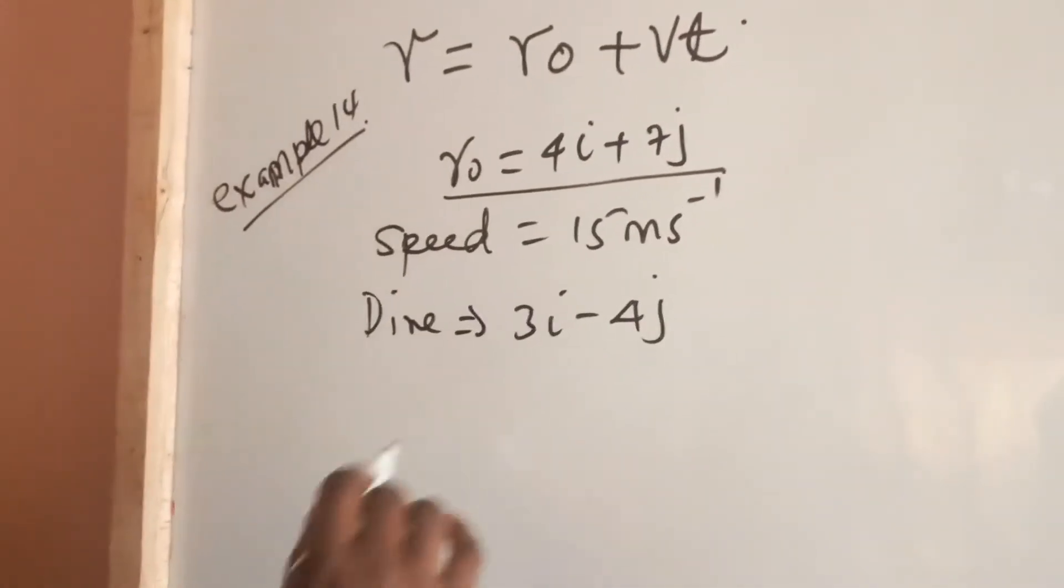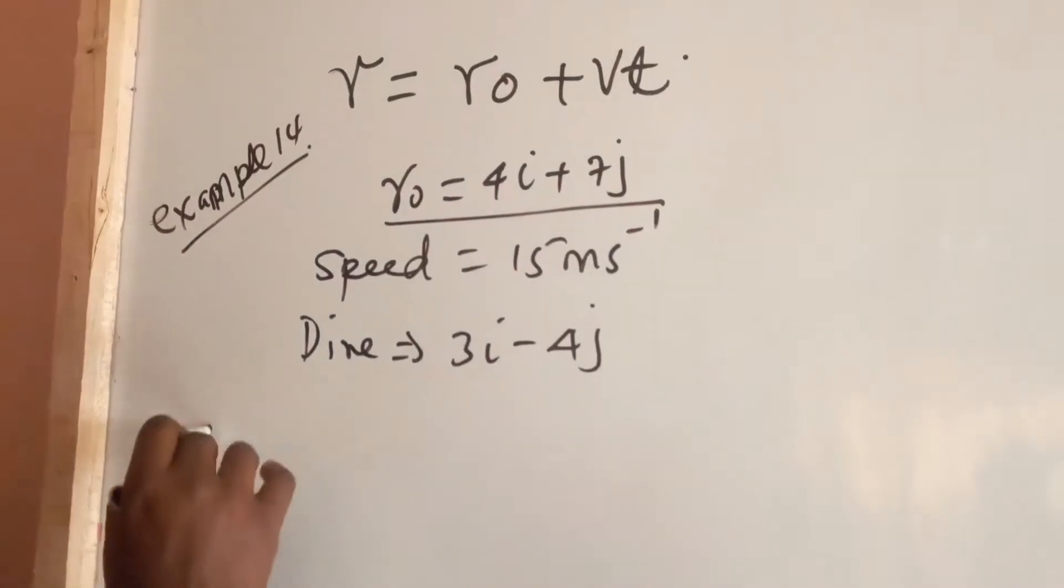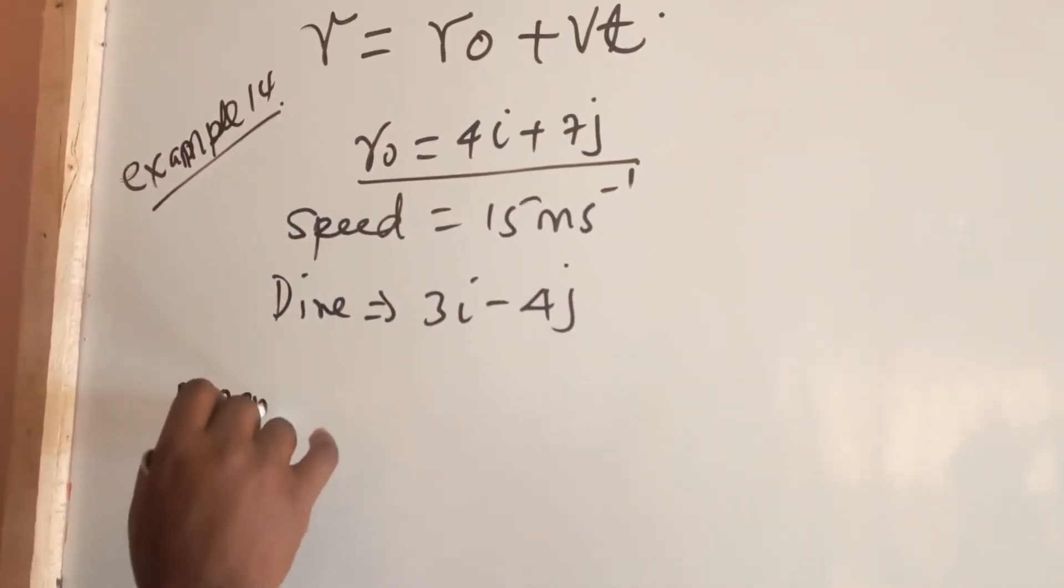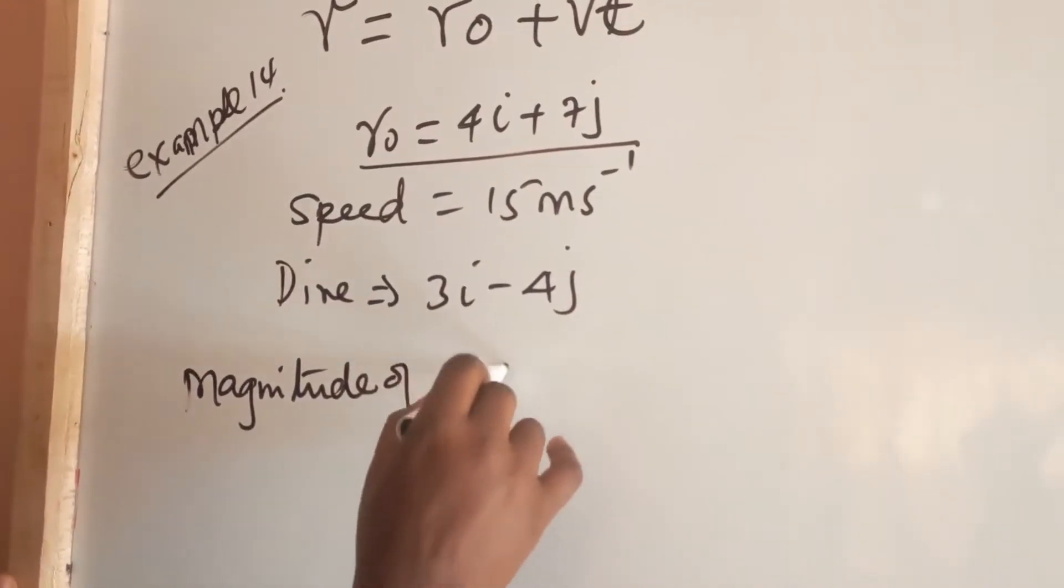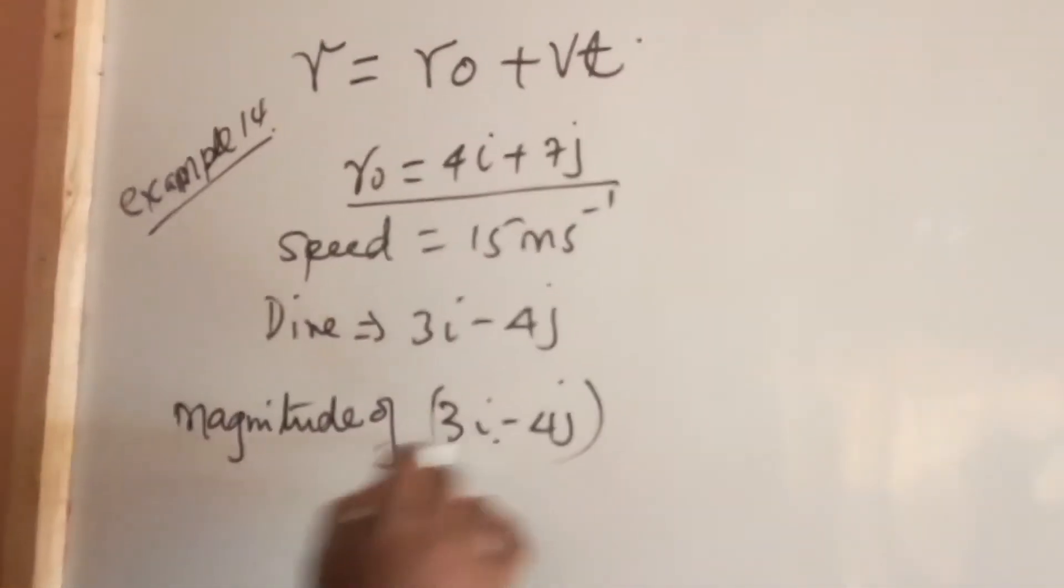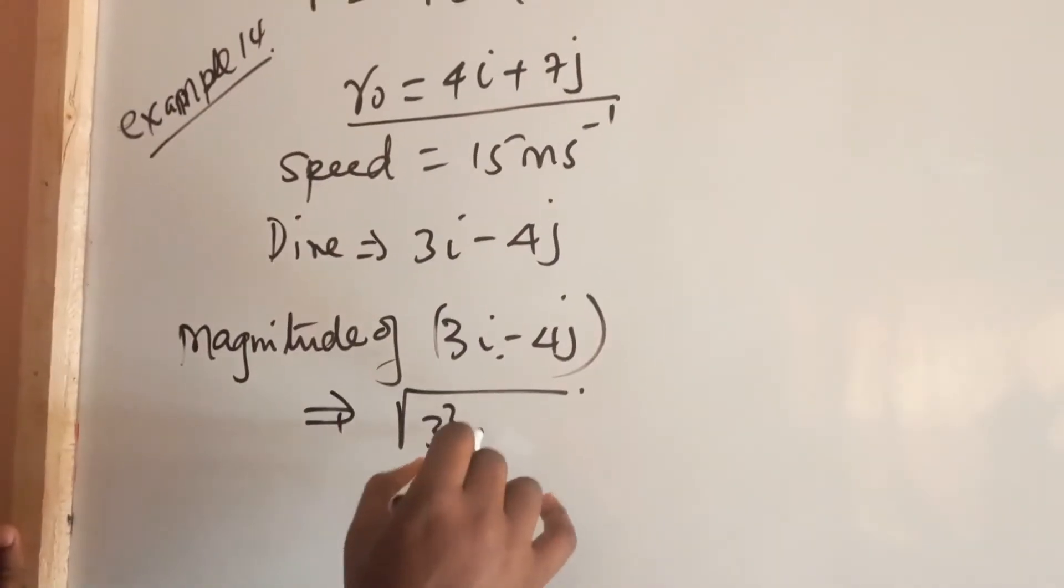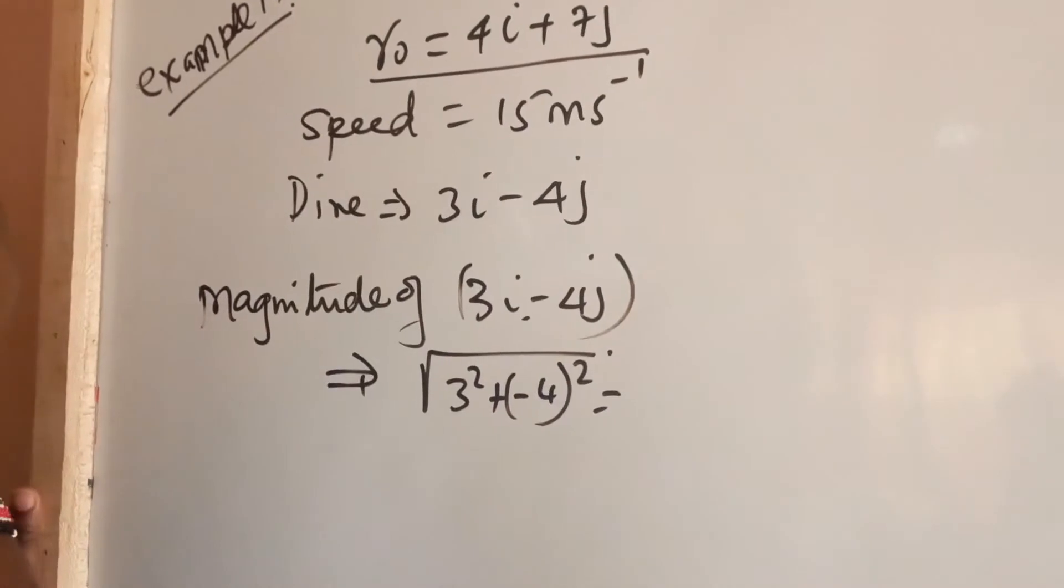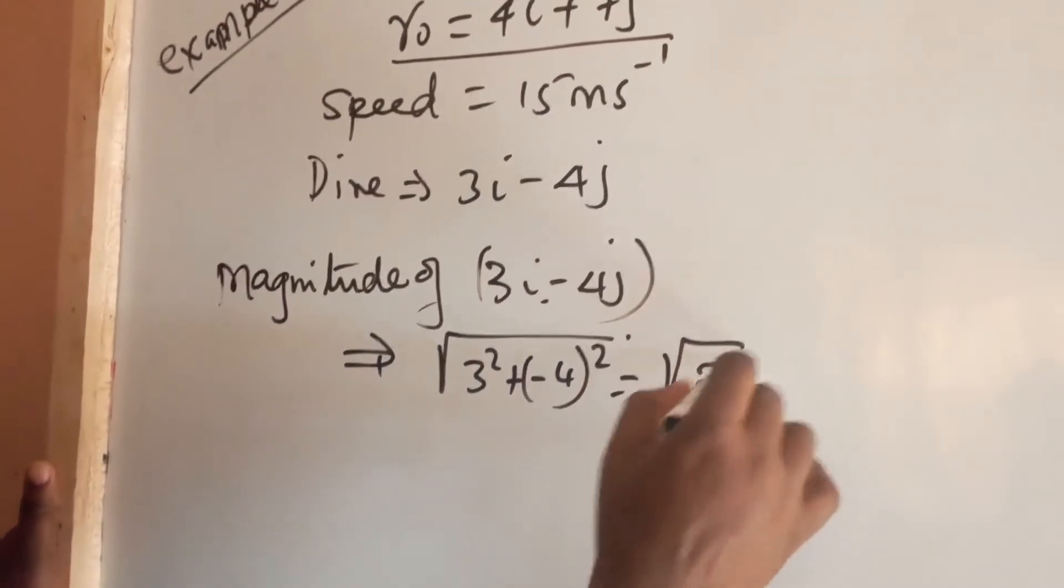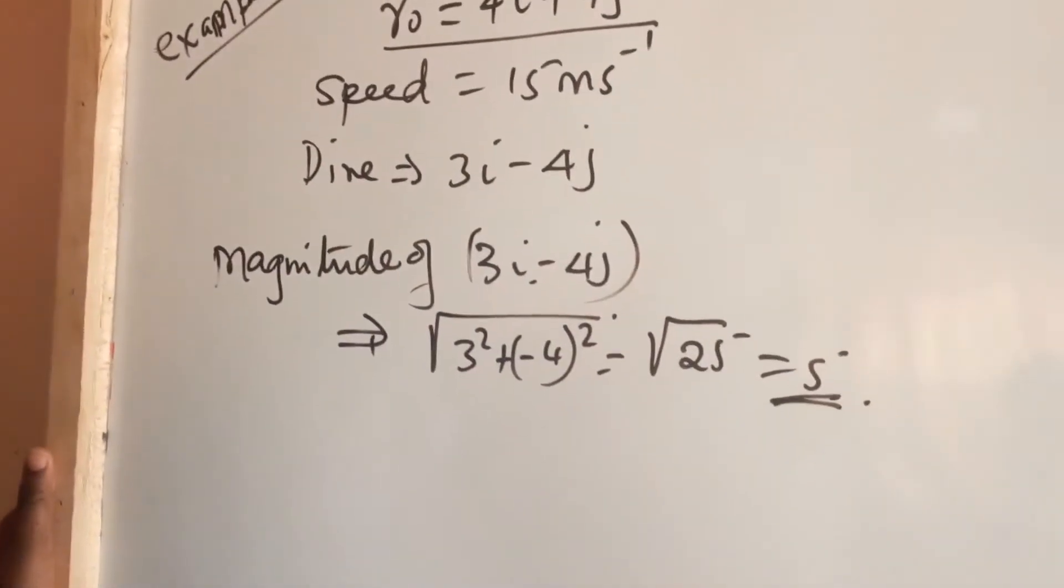If you want to talk about the magnitude of the vector, let's talk about the magnitude of 3i minus 4j, which is basically the square root of 3 squared plus minus 4 squared, which is 16 plus 9, which is the root of 25, which is 5.